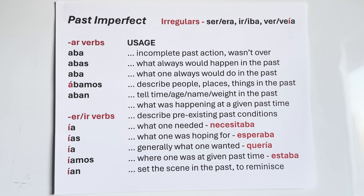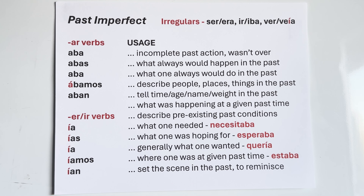The verb ir — to go: iba. In the imperfect, I was going to go would be iba a ir. It was going to rain — iba a llover. They were going to call — iban a llamar. The five forms: iba, ibas, iba, íbamos, iban. Íbamos has an accent on the I, just like éramos has an accent on the E in the we form — stressed three vowels back, breaking both rules.